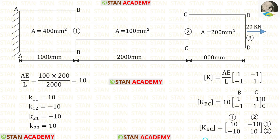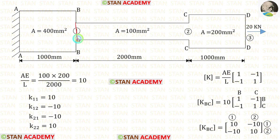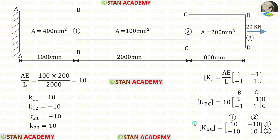Now let us make the element stiffness matrix for bar BC. Finding AE/L: area is 100, length is 2000, and Young's modulus is 200, giving AE/L = 10. Multiplying 10 with the matrix gives the element stiffness matrix. Section BB has the first coordinate, so the first row and column are denoted as 1. Section CC has the second coordinate, so the second row and column are denoted as 2. The elements are: K11, K12, K21, and K22.